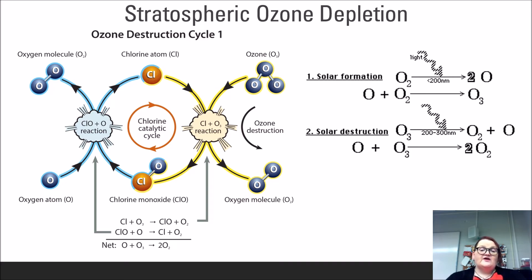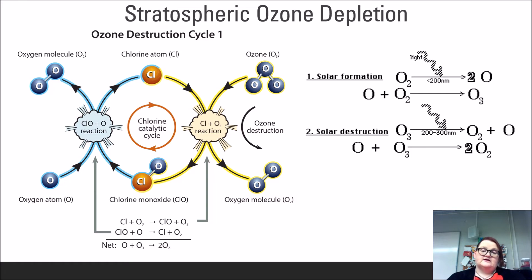This thinning often takes place faster than normal formation can match, and it is much more evident in the summer months as solar radiation is more direct. In 1987, the Montreal Protocols were designed to phase out the use of CFCs. CFCs were replaced by HCFCs — halogenated CFCs — which were found to have similar problems as traditional CFCs.